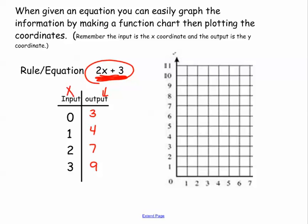So I have my x values and I have my y's, and now I can graph them. So: 0, 3 — then 1, 4 — then 2, 7 — and 3, 9. That's my graph.